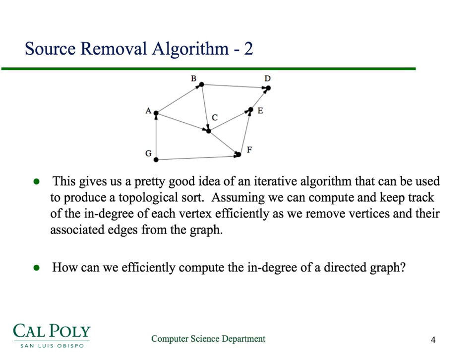For example, we would think about this graph without G in it, and then we would see that we have to change the in-degree of A to take into account that G is gone. So what we need to do is efficiently compute and keep track of the in-degree of each vertex as vertices are removed and their associated edges are removed from the graph. The question is: how can we efficiently compute the in-degree of the vertices of a directed graph?